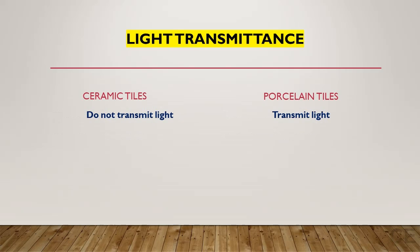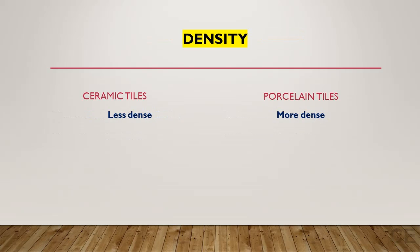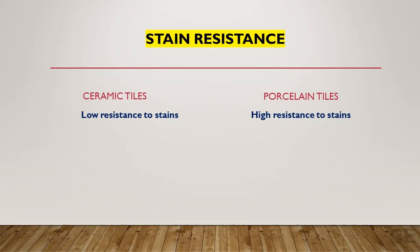Light Transmittance: ceramic tiles do not transmit light, whereas porcelain tiles transmit light. Density: ceramic tiles are less dense when compared with porcelain tile, whereas porcelain tiles are denser than ceramic tiles. Stain Resistance: ceramic tiles have low resistance to stains, whereas porcelain tiles have high resistance to stains.